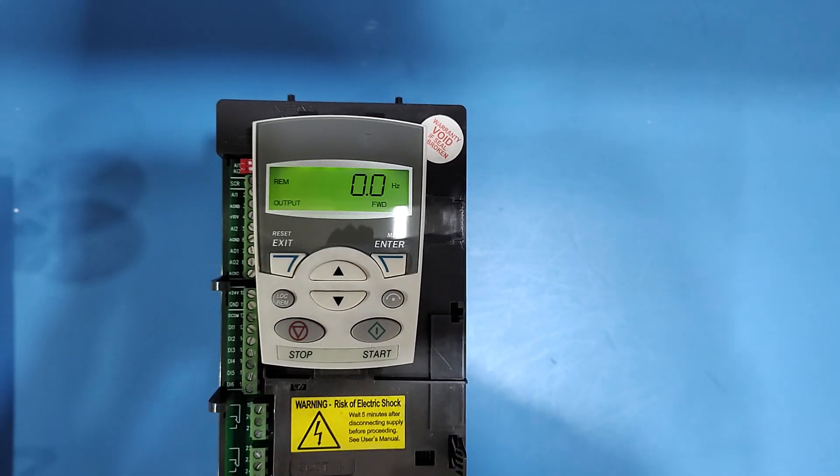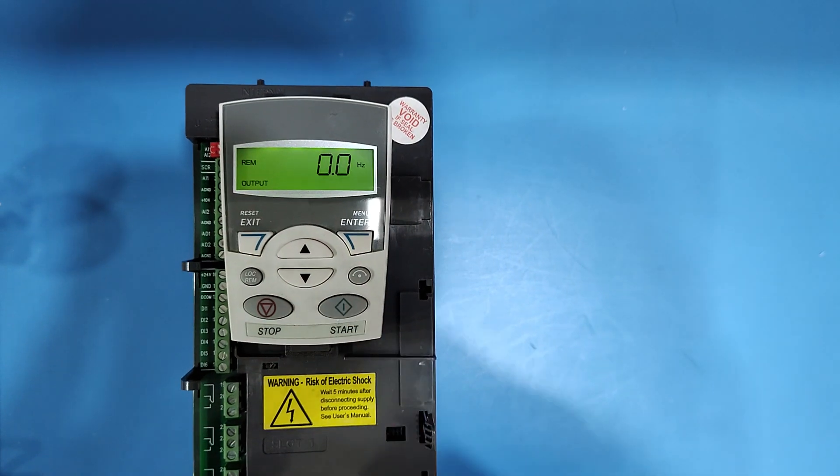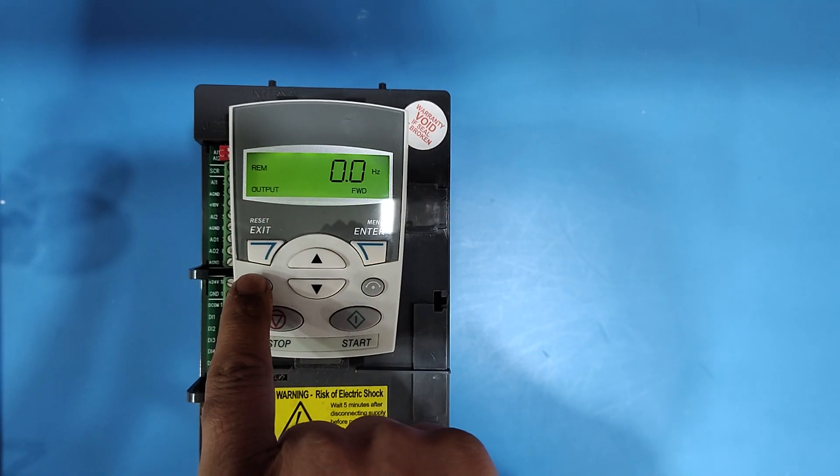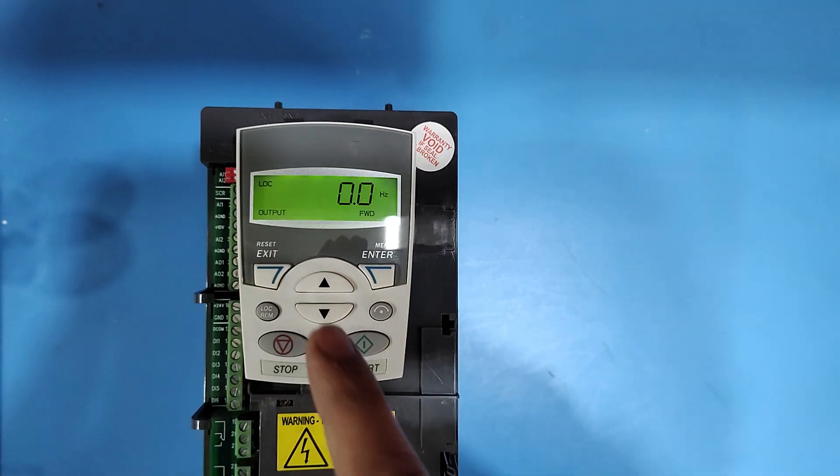REMN remote mode. If you want to run drive from keypad, press LOCRM button once. Now control mode change to the local.